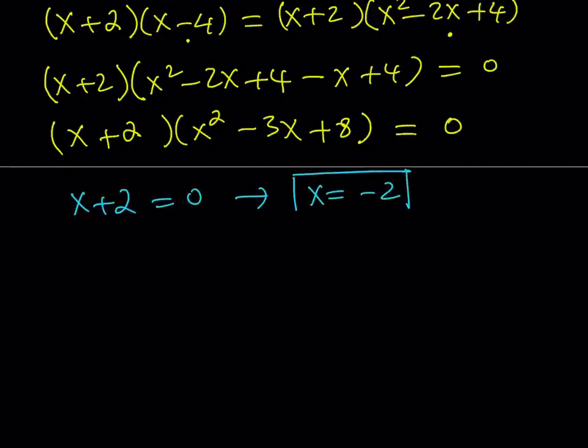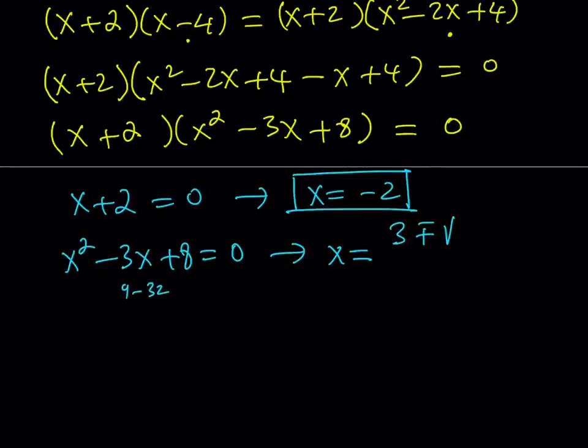X equals negative 2. One of the roots comes from the linear one. The other one is quadratic but no worries. There is a formula called the quadratic formula and looks like this. Negative b plus minus the square root of b squared minus 4ac.